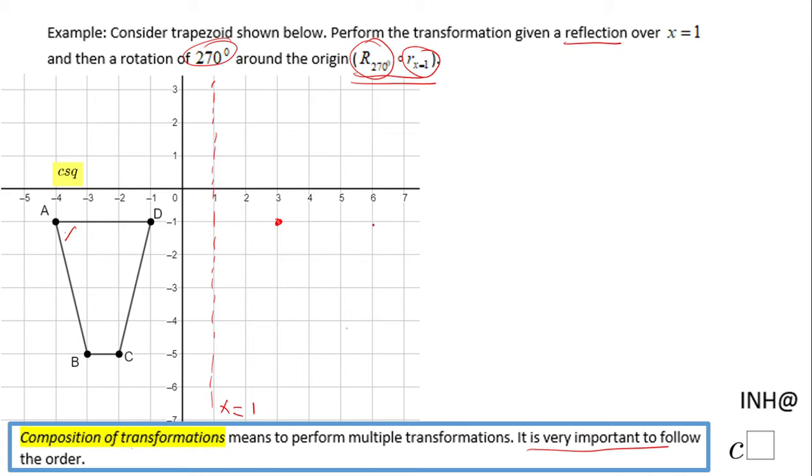Point A should be right here if we reflect it over x equals 1. Point B will be right here, and point C right here. So we can connect them now and get the new trapezoid reflected over x equals 1.